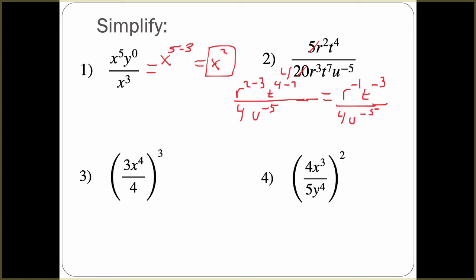We've simplified all our bases and subtracted our exponents. Now we're going to move all our negative exponents around. Since r is to the negative first power, we move it to the denominator — so we have 4r. t to the negative third in the numerator moves down, giving us t cubed in the denominator. And u to the negative fifth in the denominator moves to the numerator, giving us u to the fifth. The simplified form is u to the fifth over 4r t cubed.